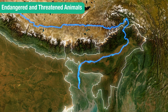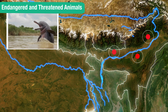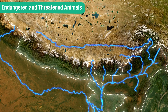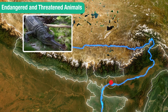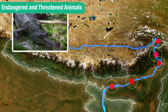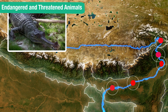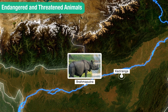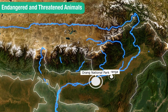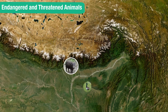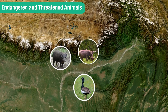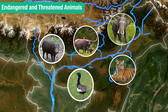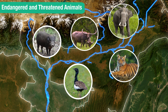Endangered animals along these rivers include the Ganga river dolphin, with a significant population in the Brahmaputra and its tributaries; the Indian gharial, which is critically endangered with fragmented populations in the upper Brahmaputra; and most notably the one-horned rhinoceros, mainly found in Kaziranga and Orang national parks. Other wildlife includes the Bengal florican, wild buffalo, Asian elephant, and tigers found along the national parks and floodplain grasslands.